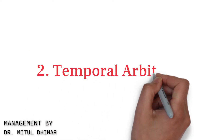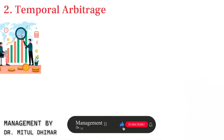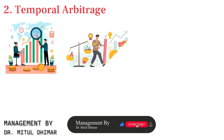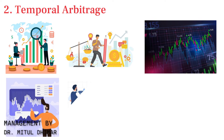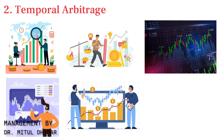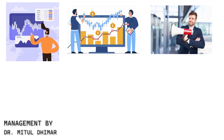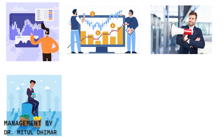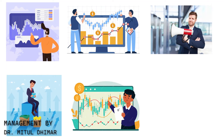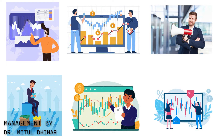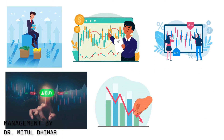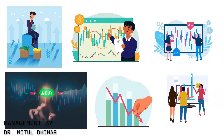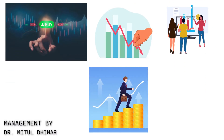Second, Temporal Arbitrage. Temporal Arbitrage focuses on exploiting price differences that occur over time. Consider the stock market — stock prices fluctuate throughout the trading day. Let's say company X announces positive earnings after the market closes. You anticipate that the stock price will rise when the market opens the next day, so you buy the stock before the market closes and sell it when the price increases, making a profit from that time difference.